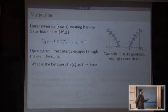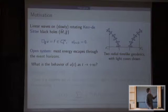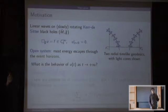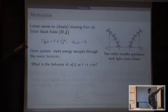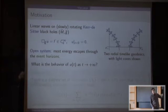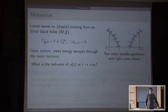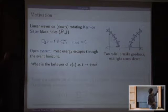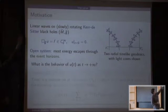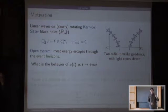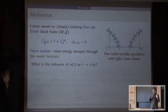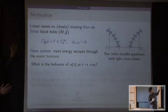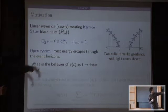The motivating example is this: take a rotating black hole in a spacetime with a positive cosmological constant. That's a Lorentzian manifold.